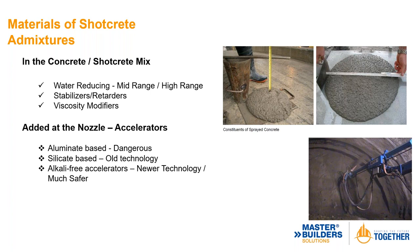For admixtures, the most common are water-reducing: mid-range and high-range, typically high-range because you want to get down to a 0.40 to 0.38 water-cement ratio. We do see stabilizers and retarders — I prefer the stabilizer because the shotcrete accelerator more effectively kills off the stabilizer than the retarder. There's also a much higher killing reaction of the accelerator on stabilizers versus retarders. If aggregates are slightly out of spec, viscosity modifiers can help — particularly important when pumping concrete down 8,000 to 10,000 feet (2,000 to 2,500 meters) to ensure a non-segregating mix.